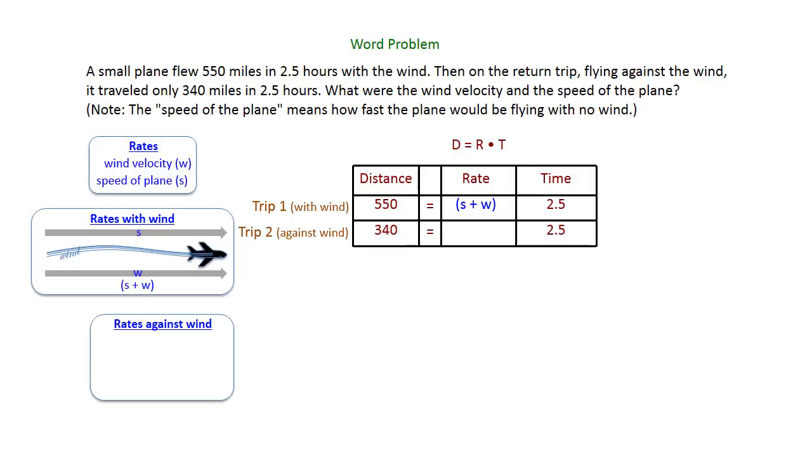Thinking about that plane going against the wind, the plane has turned around now, but the wind is still pushing in that direction opposite, slowing the plane down. So instead of adding the wind to the speed of the plane, we're going to take the wind speed away. That's going to be S minus W. And as you see, the plane doesn't go as far on that second trip.